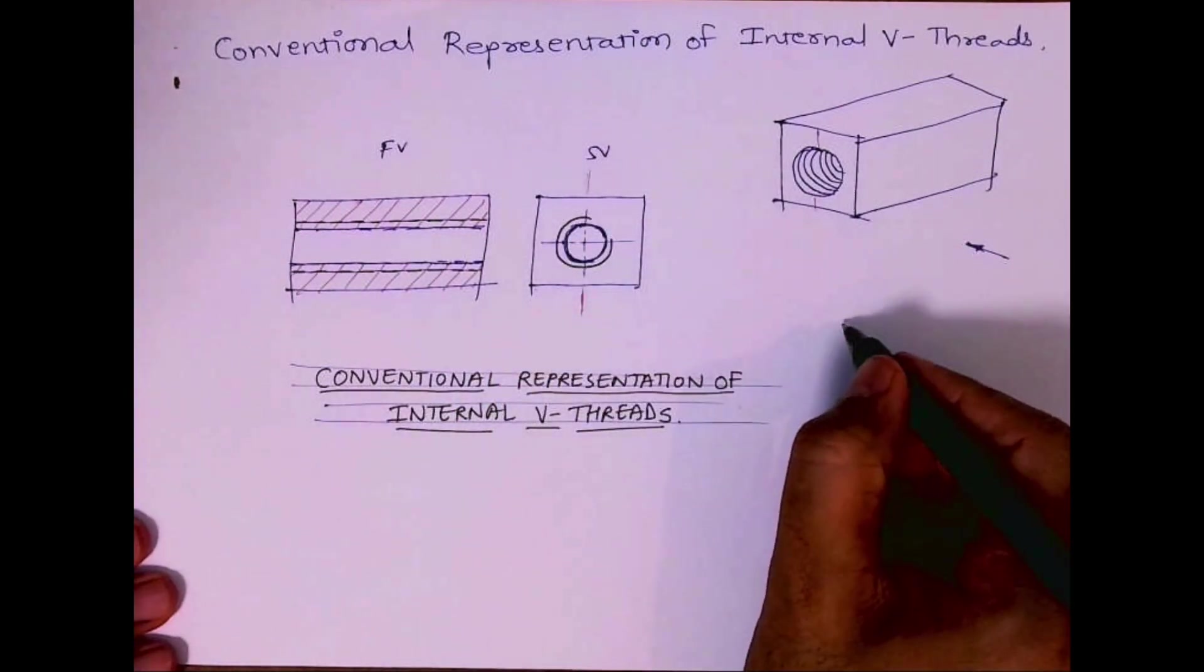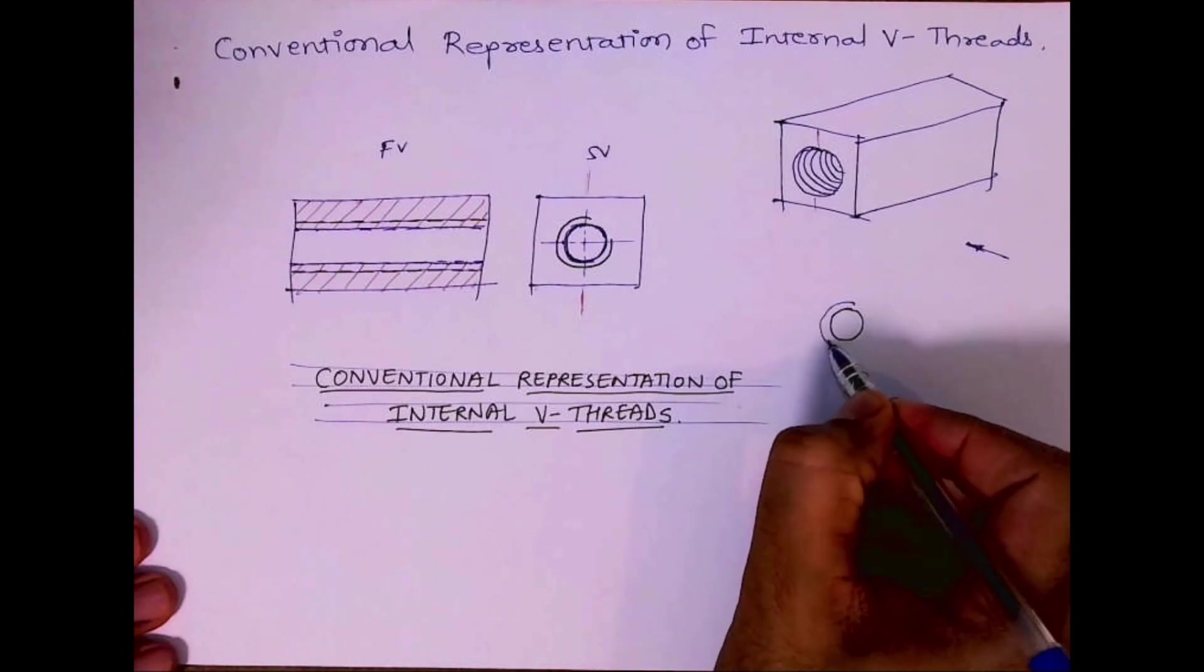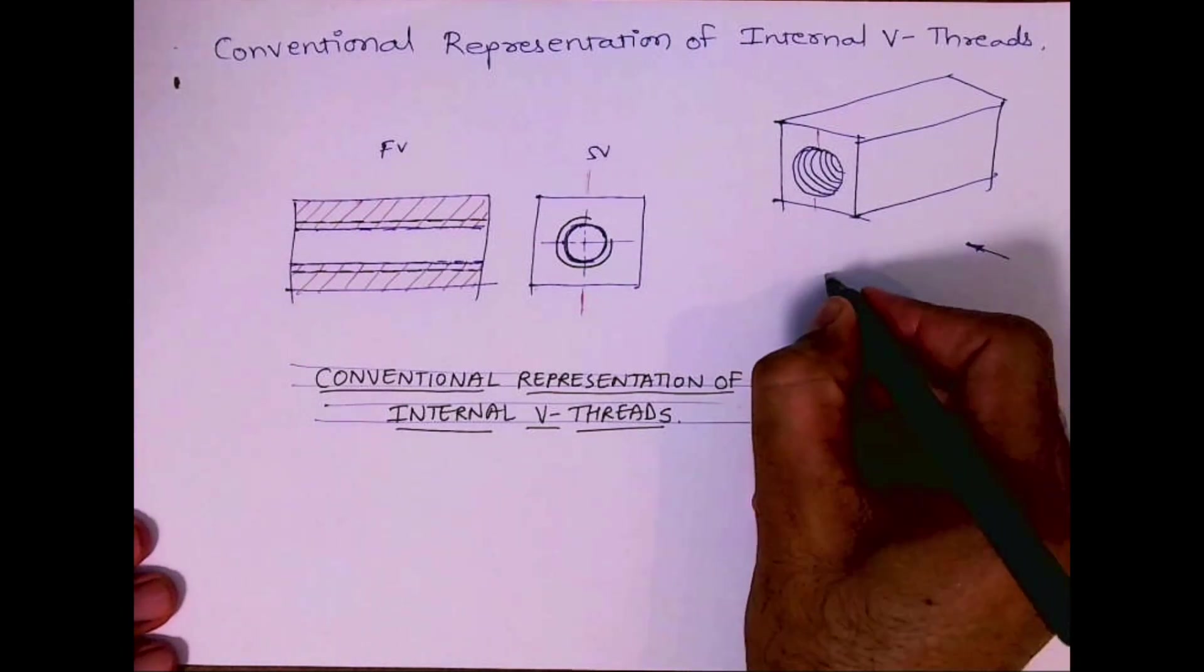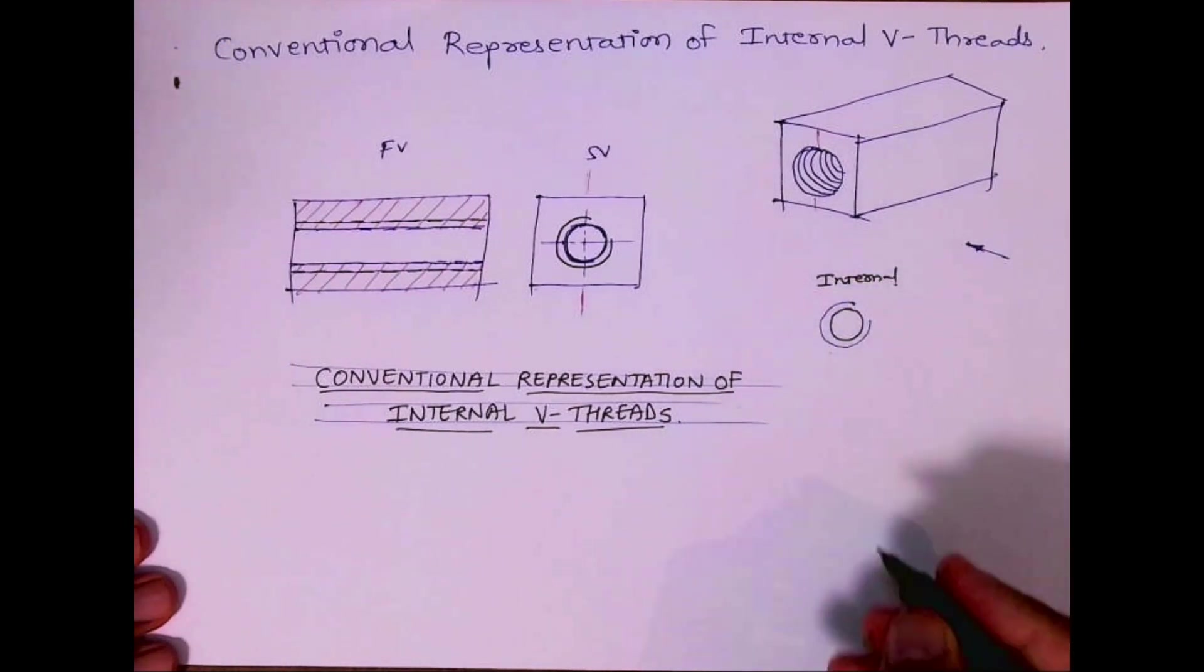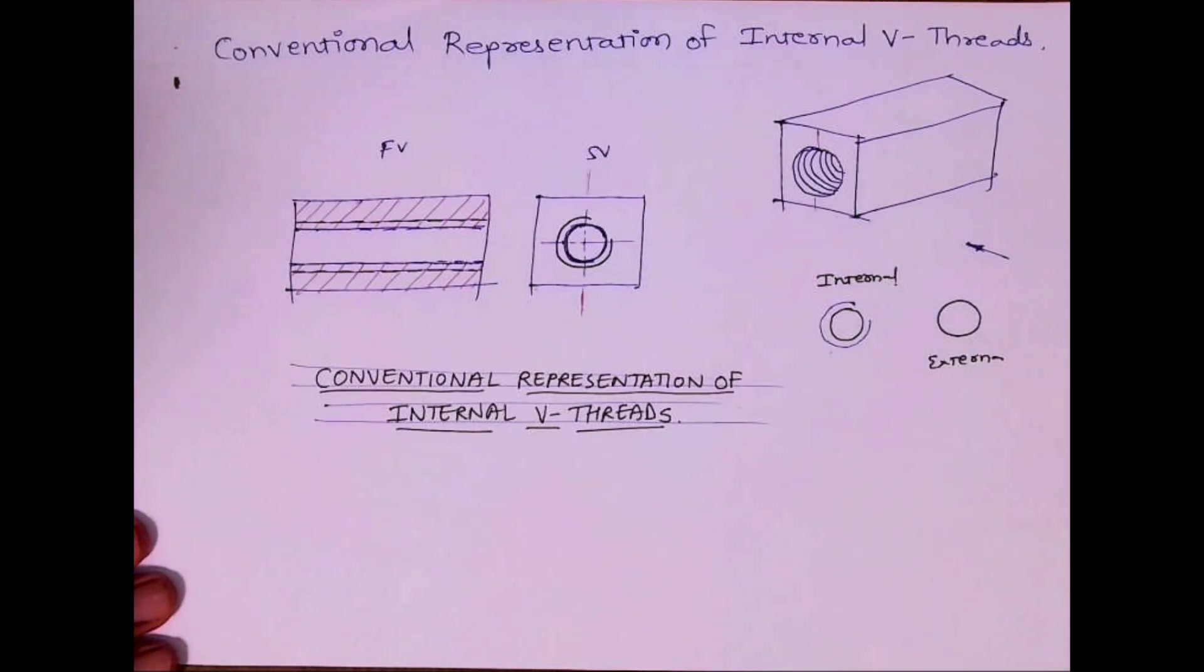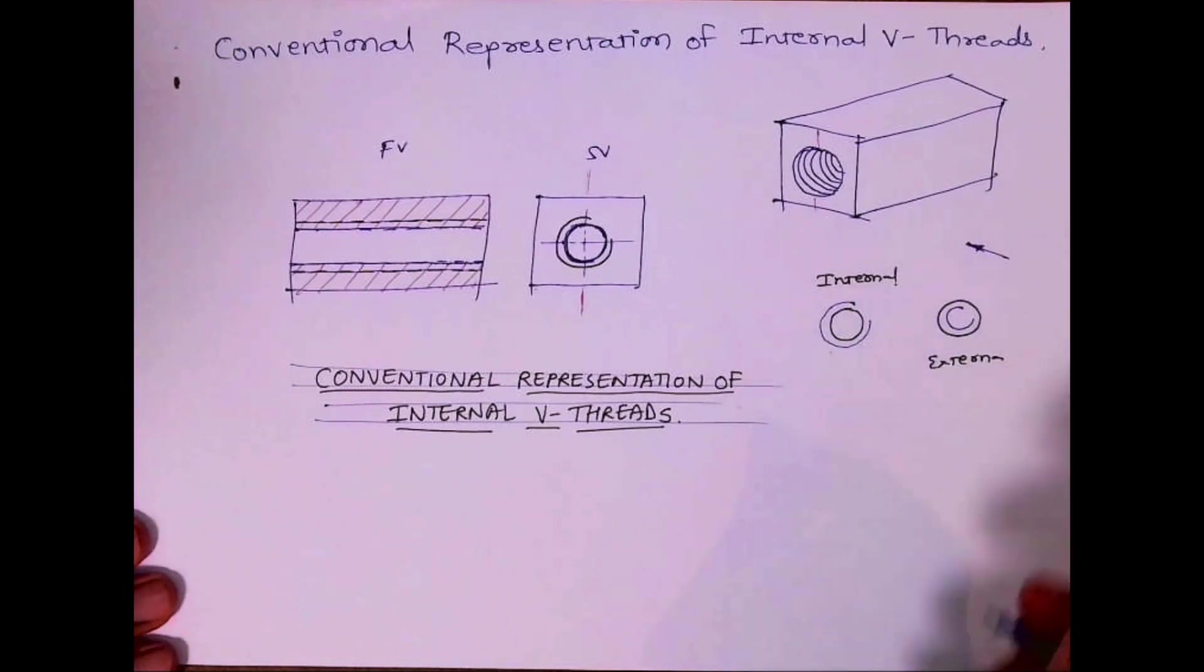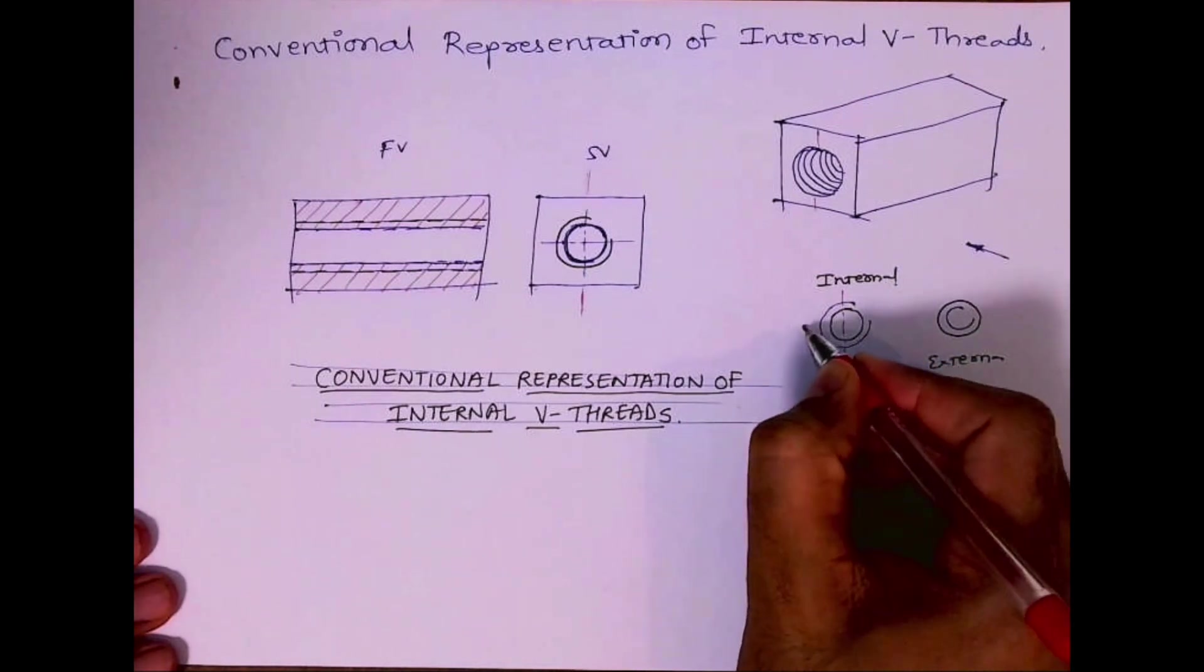See, so always remember this is a difference when you're going for internal thread and external thread representation. When you go for internal thread, always remember the inner circle will be dark and outer one will be medium dark. When you're going for external thread profile, outer one will be dark and inner one will be medium dark and three-fourths. This you should keep in mind.